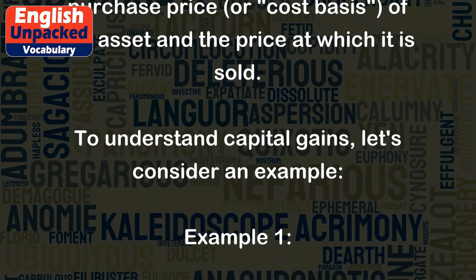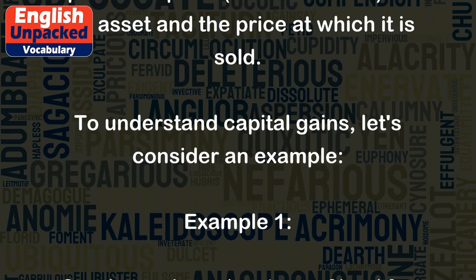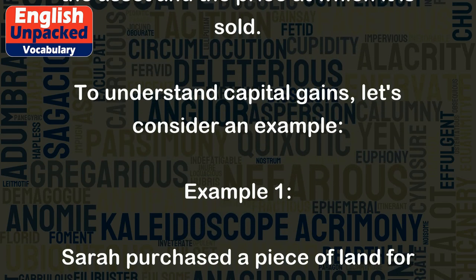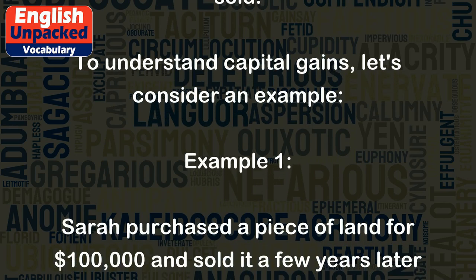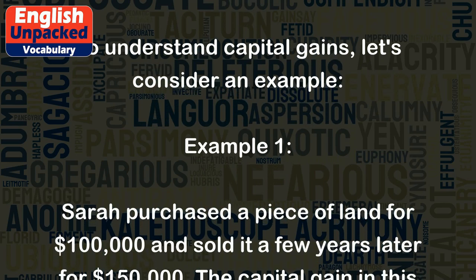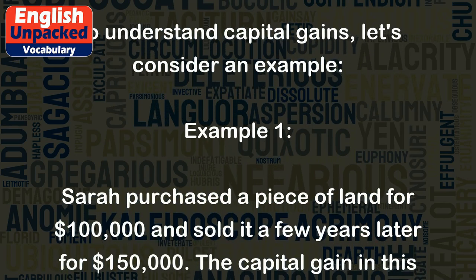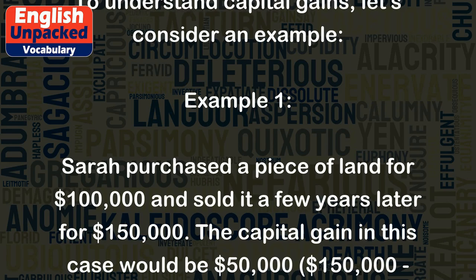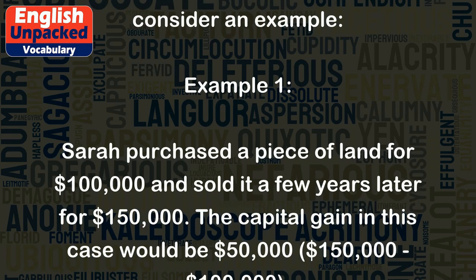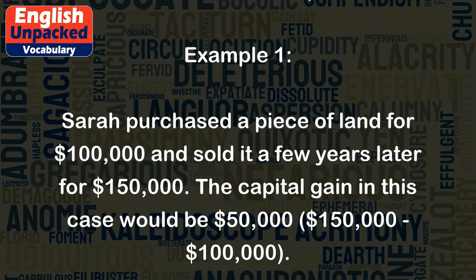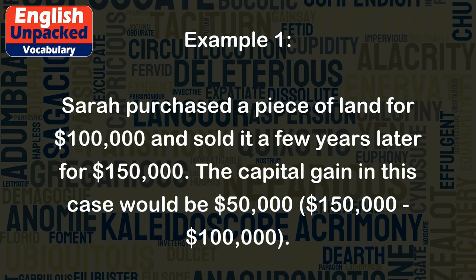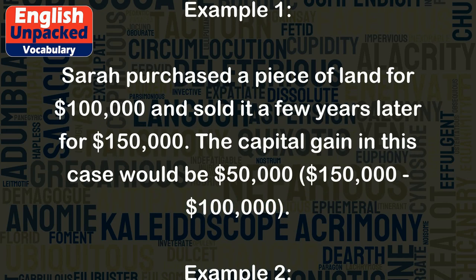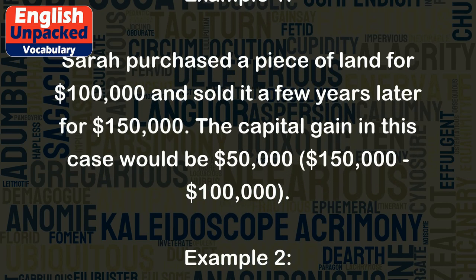Example 1. Sarah purchased a piece of land for $100,000 and sold it a few years later for $150,000. The capital gain in this case would be $50,000 — $150,000 minus $100,000.